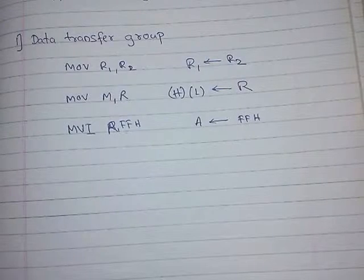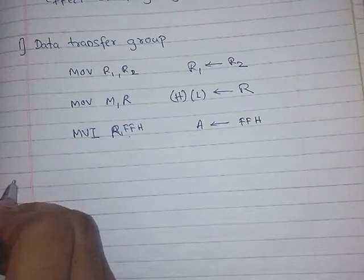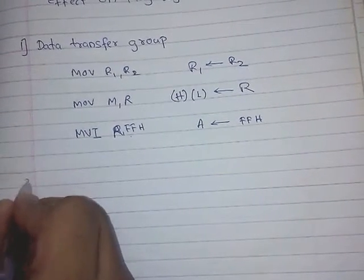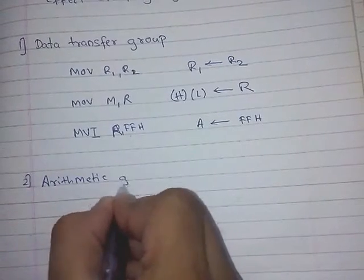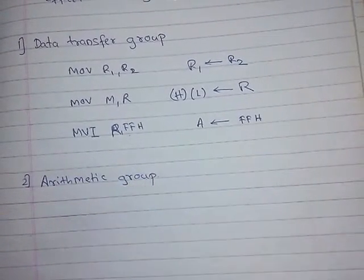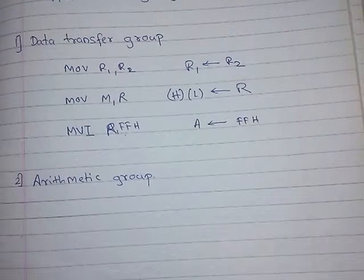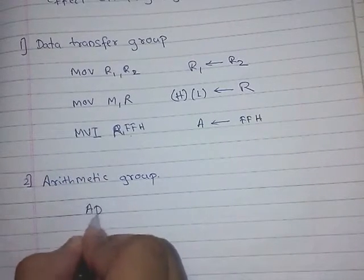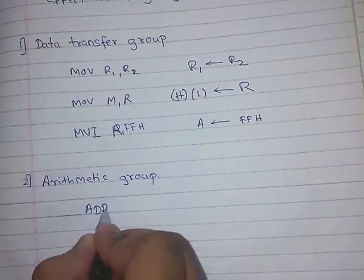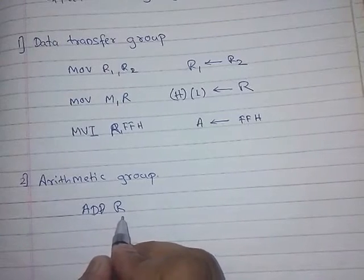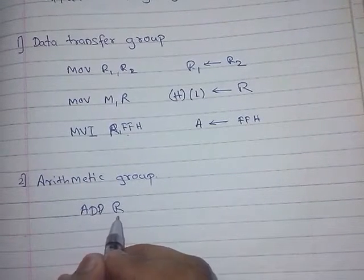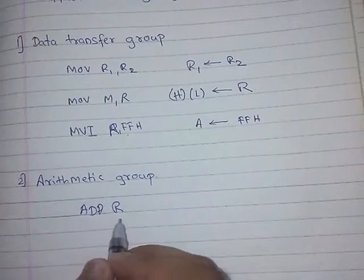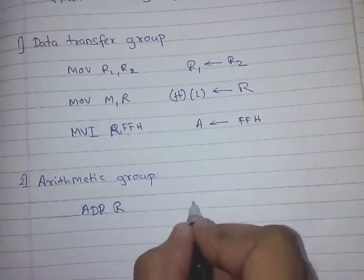Now the next instruction group is the arithmetic group. We saw what the arithmetic group is. Now let's look at some of its examples. First: ADD R — here R is a register.